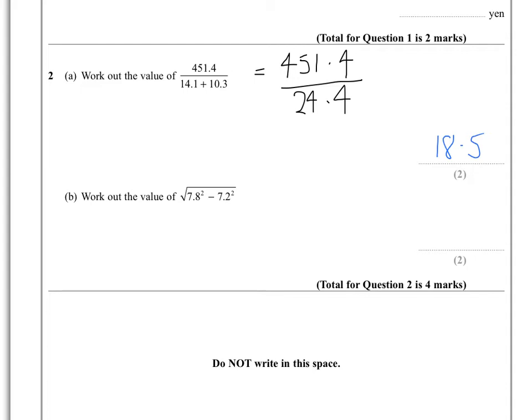Now in part B, we're asked to work out the value of the square root of 7.8 squared minus 7.2 squared. So you have to do each of those separately.